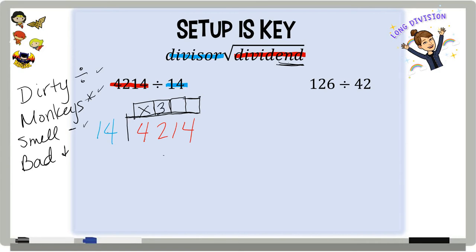The other thing you can do is off to the side. You can do 14 times 3 if you're not sure and double check. 4 times 3 is 12, add the 1 up top. 1 times 3 is 3 plus 1 is 4. So I did get 42. I subtract and I have 0.